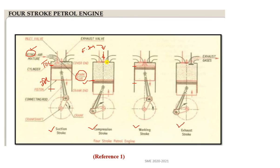After self-ignition, both valves remain closed and the combustible gases force the piston downward from TDC to BDC — this is the power stroke. At the end of the exhaust stroke, the piston moves from BDC to TDC and the exhaust gases leave the engine cylinder to the atmosphere through the exhaust port. This is the working of the four-stroke diesel engine.